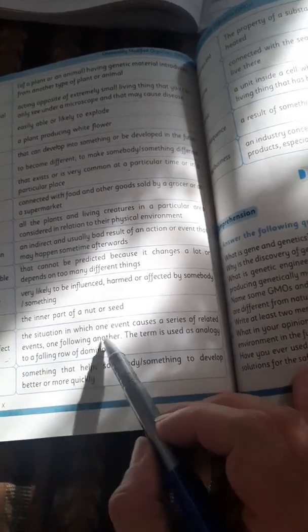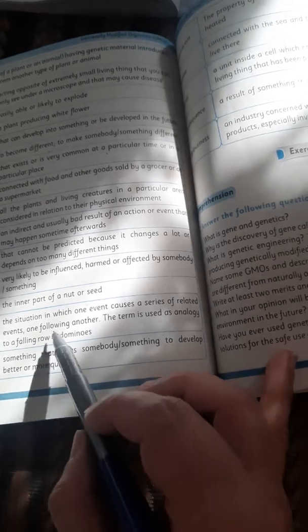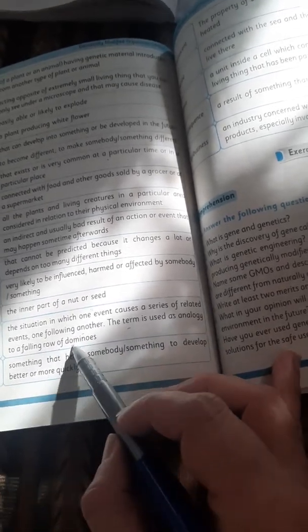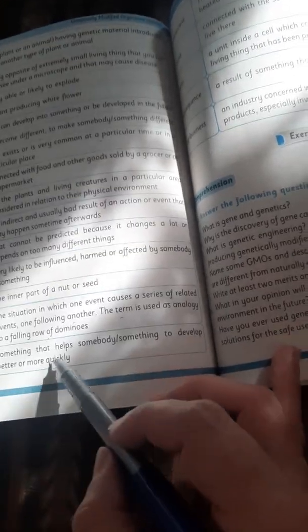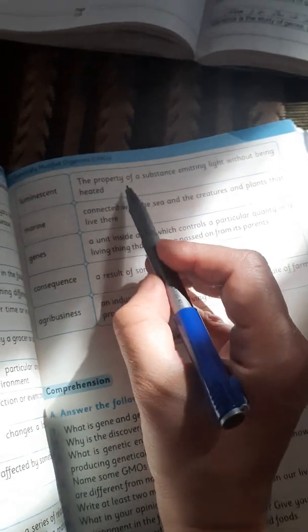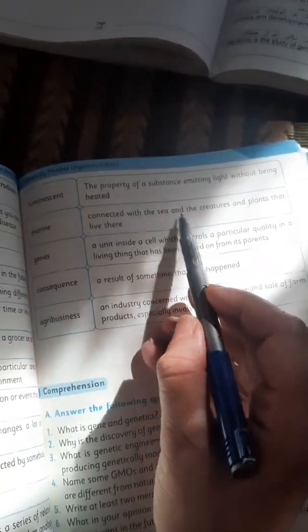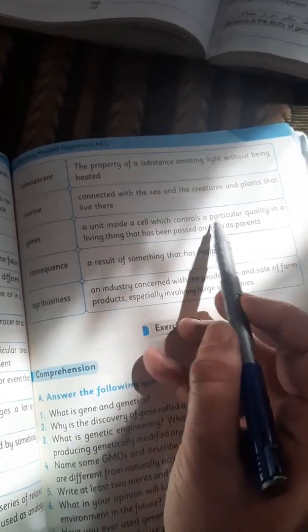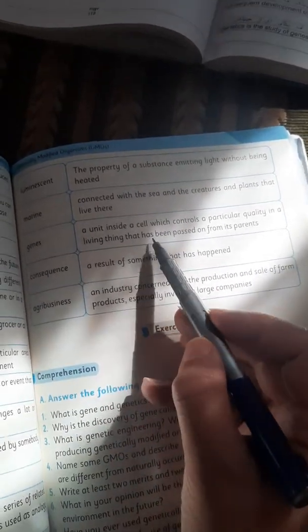Domino effect: the situation in which one event causes a series of related events, one following another. The term is used as analogy to a falling row of dominoes. Stimuli: something that helps somebody or something to develop better or more quickly. Luminescent: the property of a substance emitting light without being heated. Marine: connected with the sea and the creatures and plants that live there. Genes: a unit inside a cell which controls a particular quality in a living thing that has been passed on from its parents. Consequence: a result of something that has happened.